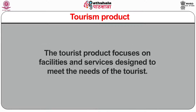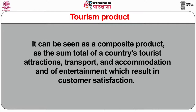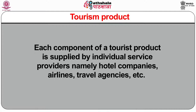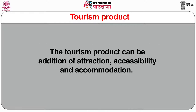The tourist product focuses on facilities and services designed to meet the needs of the tourist. It can be seen as a composite product — the sum total of a country's tourist attractions, transport, accommodations, and entertainment — which result in customer satisfaction. Each component of a tourist product is supplied by individual service providers, namely hotel companies, airlines, travel agencies, etc. The tourism product can be seen as the addition of attraction, accessibility, and accommodation. Tourism products are an assemblage of goods and services.